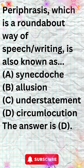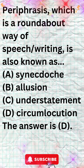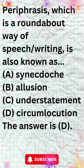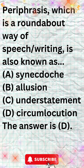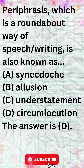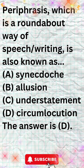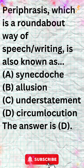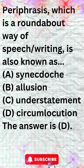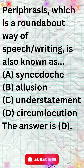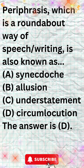Here are some examples of circumlocution. Instead of saying 'I'm tired,' someone might say 'I'm feeling fatigued.' Instead of saying 'I'm angry,' someone might say 'I'm feeling somewhat incensed.' Instead of saying 'I'm not interested,' someone might say 'I'm afraid that I don't have the bandwidth to take on any new commitments.'